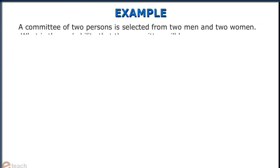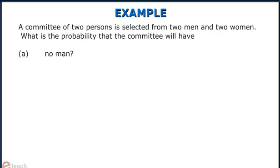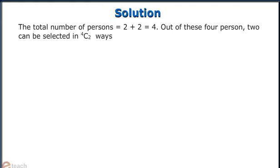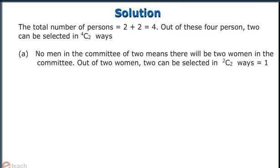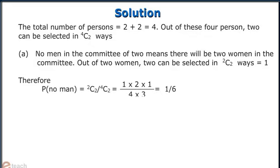A committee of two persons is selected from two men and two women. What is the probability that the committee will have: a) no man, b) one man, c) two men. The total number of persons is 2 plus 2, which is 4. Out of these 4 persons, 2 can be selected in 4C2 ways. No men in the committee means there will be two women. Out of two women, 2 can be selected in 2C2 ways, which equals 1. Therefore, probability of no man is 2C2 divided by 4C2, equal to 1 by 6.